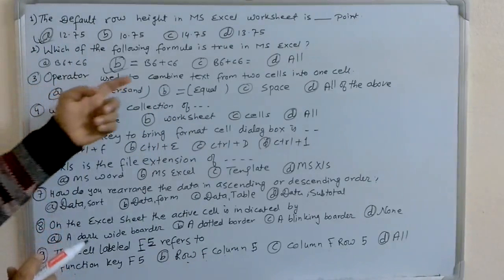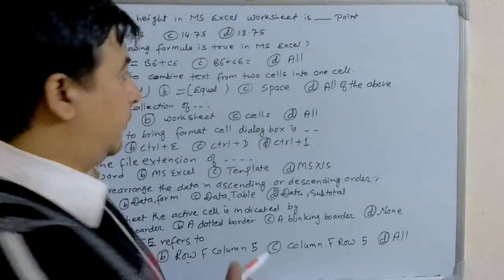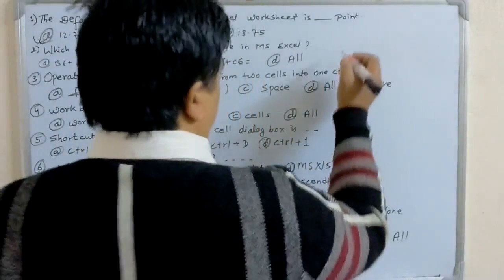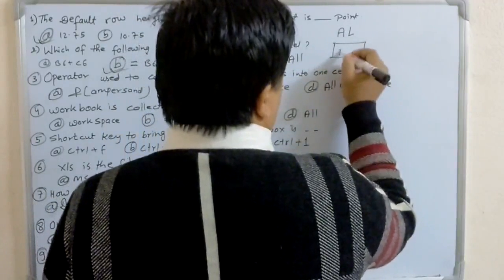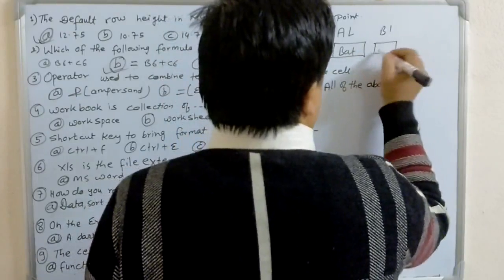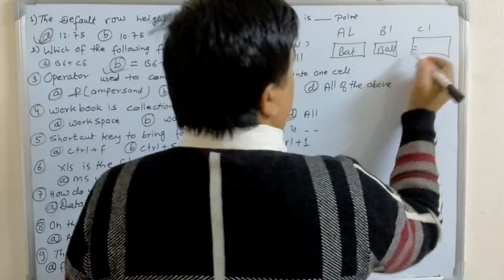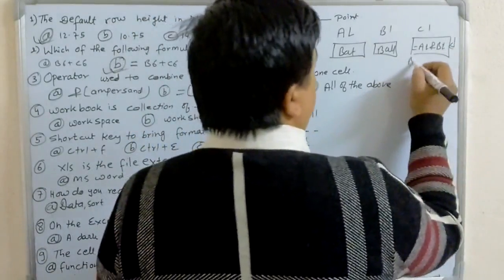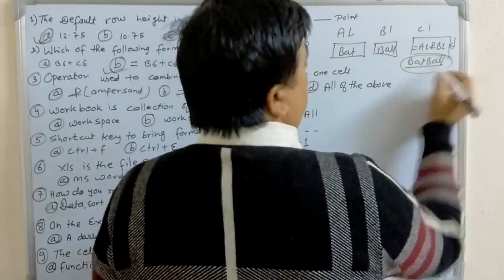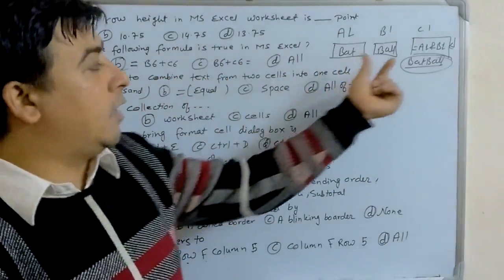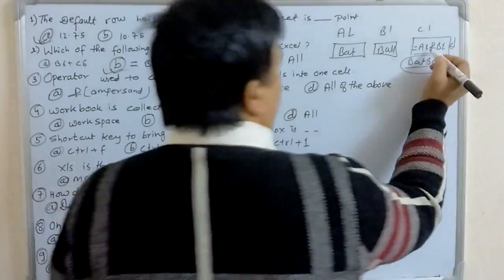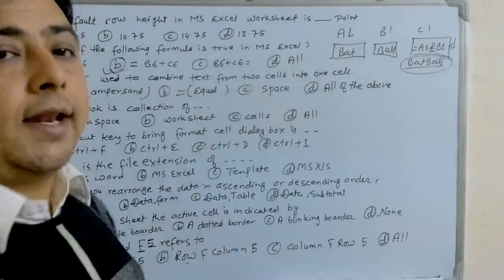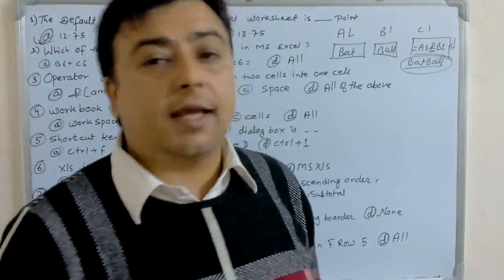Next: what operator is used to combine text from two cells into one cell? For example, if cell A1 contains 'bat' and cell B1 contains 'ball', and in cell C1 you write =A1&B1, then when you press Enter you will get the combined result 'batball'. So to combine two texts into one cell, you use the ampersand (&) operator.